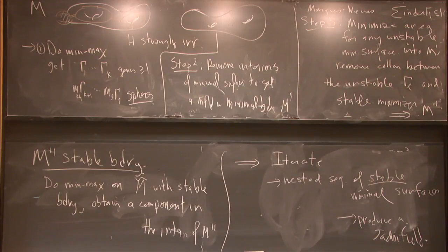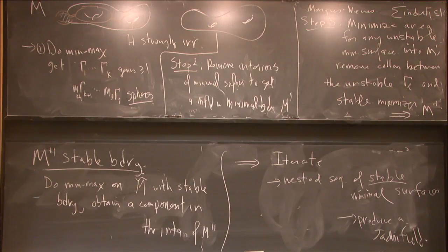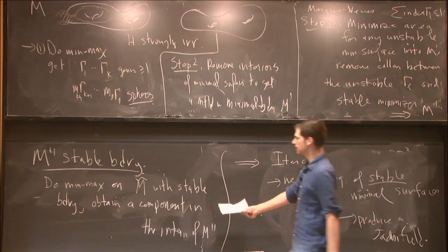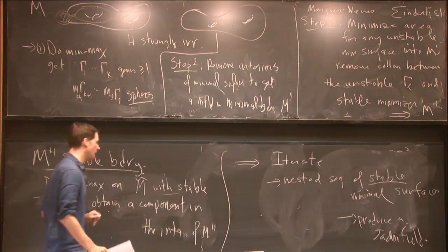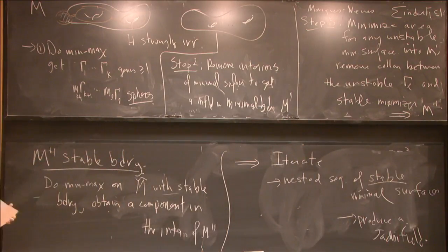That was their sketch from the 1980s. But the missing ingredient is: when you do min-max on a manifold with stable boundary, do you always get an unstable component — something in the interior? That is what needed to be established.